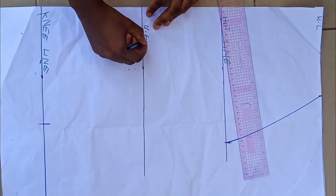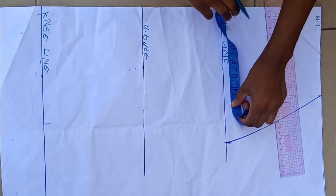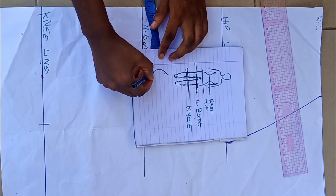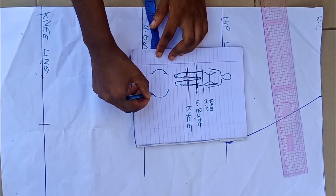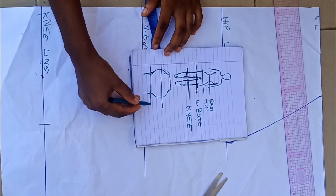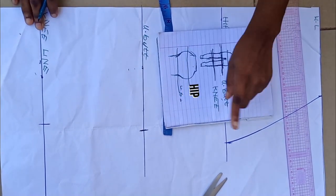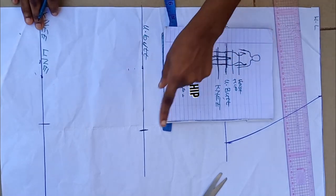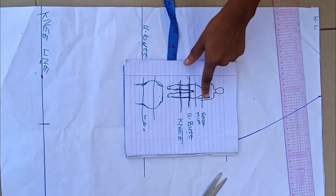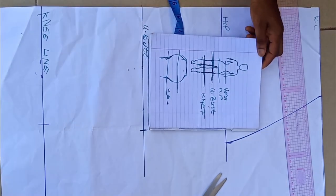I'll deduct 1.25 from what I have on my hip line and mark that out on the under butt line. With this diagram you can see the difference between the hip and the under butt. If you have a very curvy shape with much difference between the under butt and hip circumference, you can deduct two inches. If you are like the diagram above, you can deduct 1.25 to 1.5 depending on how fitted you want it. For me I'm going with 1.25.